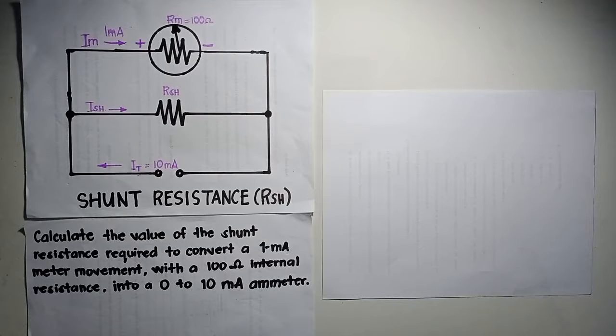And now, we're going to solve some given problems. Calculate the value of the shunt resistance required to convert a 1 mA meter movement with a 100 ohms internal resistance into a 0 to 10 mA ammeter.